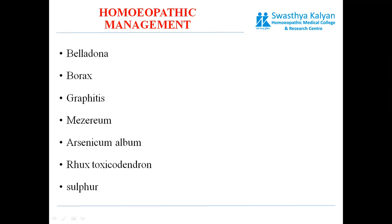Rhus Toxicodendron: general indications are the patient is very chilly, restless, anxious, and feels better by continued motion. Particular symptoms: skin of the diaper area is covered with numerous vesicles with itching; parts involved are swollen; rashes get worse at night and feel better by warmth application and in dry weather.